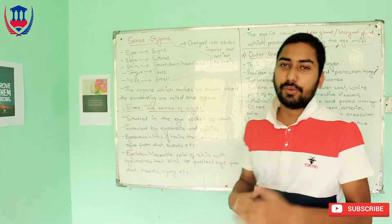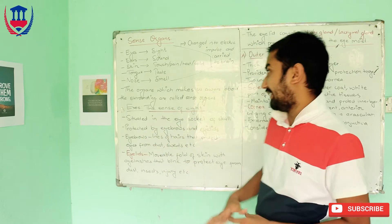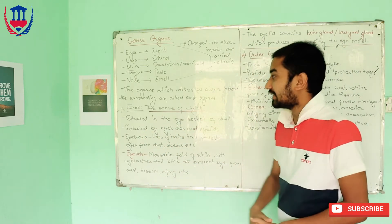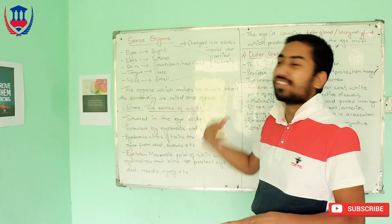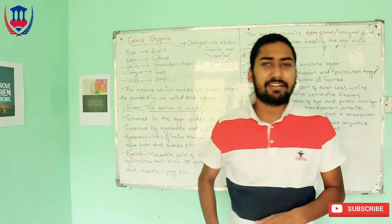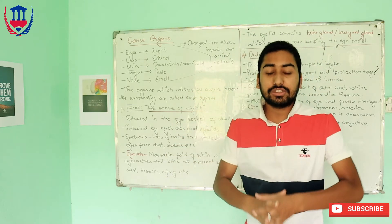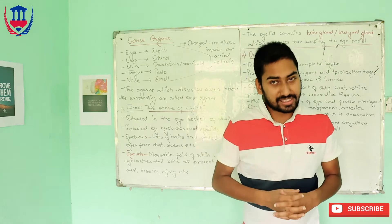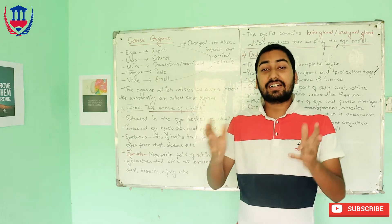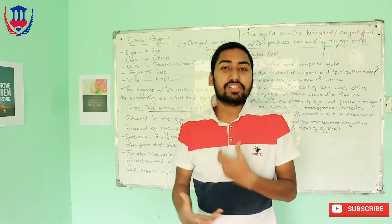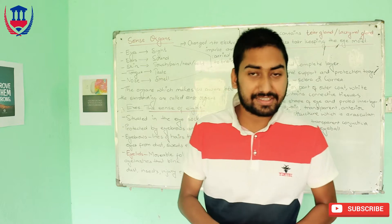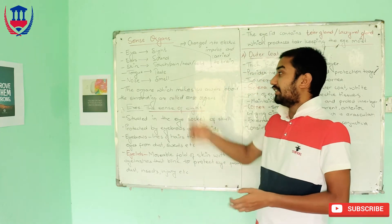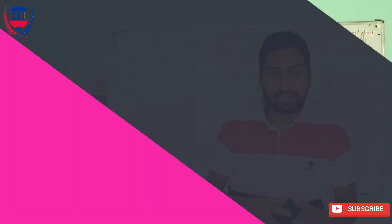The organs which make us aware about the surroundings are called sense organs. We have five sense organs: eyes, ears, skin, tongue, and nose.